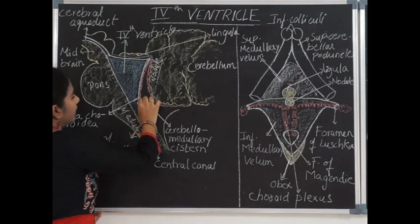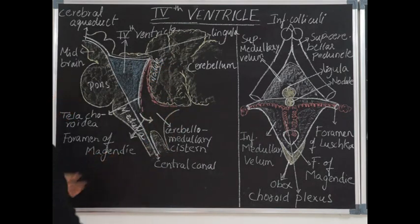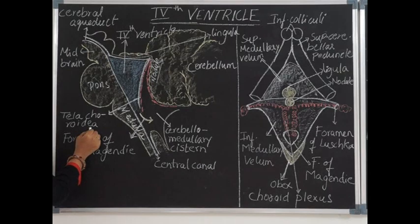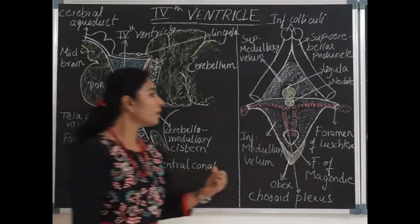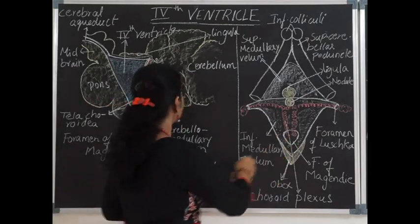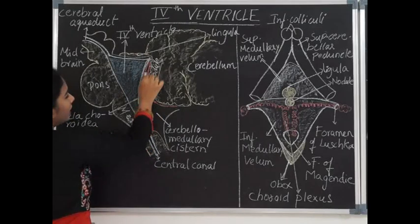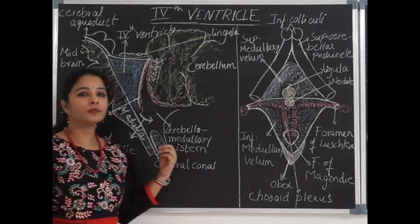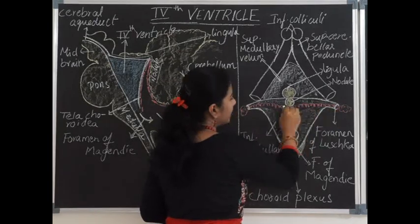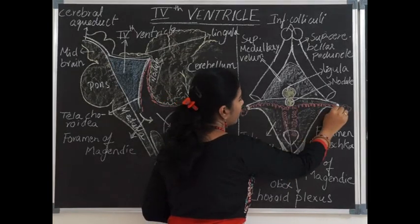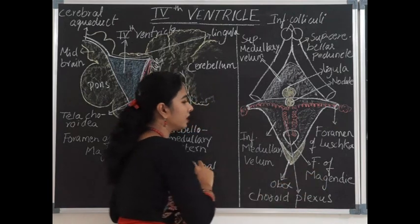The inferior medullary velum is a non-nervous sheet lined by the ependyma and covered by a double-layered fold of pia mater called the tela choroidea. The tela choroidea consists of blood vessels called the choroid plexus of the fourth ventricle, which enters along the roof of the inferior medullary velum within the double-layered pia mater. The choroid plexus is derived from the posterior inferior cerebellar arteries and appears like the letter T, with a horizontal limb and two vertical fringes.